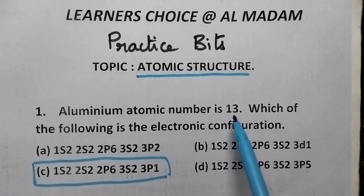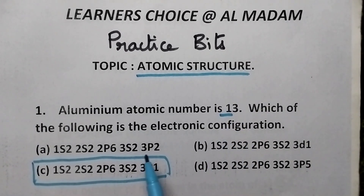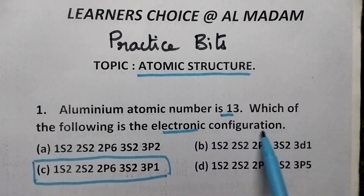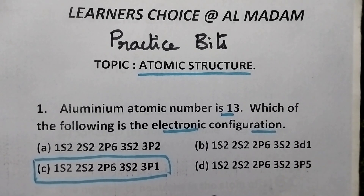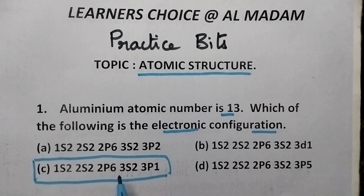Aluminium atomic number is 13. Which of the following is the electronic configuration? Its configuration is 1s2, 2s2, 2p6, 3s2 and 3p1.